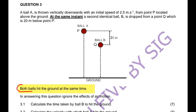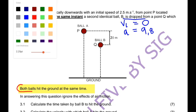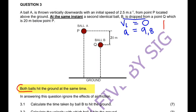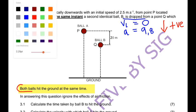We want the time taken by ball B to hit the ground. For ball B, it is dropped, so the initial velocity is zero. The acceleration is 9.8 m/s². I'll choose downwards as positive since that's the direction of motion, so a = 9.8 m/s² downwards.